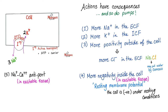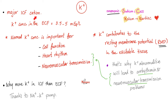Moreover, we can utilize this primary sodium-potassium ATPase and use that energy for a secondary sodium-calcium exchanger, like the one found in your heart. Potassium is the main positive ion inside the cell. Outside the cell, its concentration is between 3.5 and 5 milliequivalents per liter. Why do you need potassium? Potassium is very important for the resting membrane potential and for repolarization or hyperpolarization. So it's important for cell function, heart rhythm, and neuromuscular transmission.